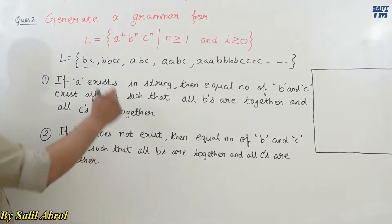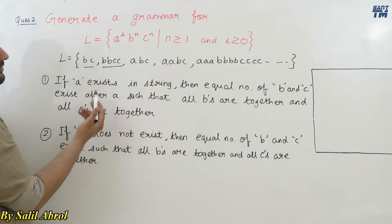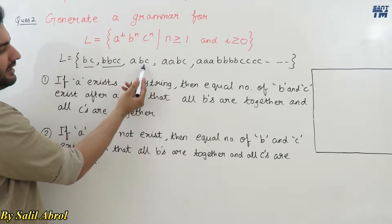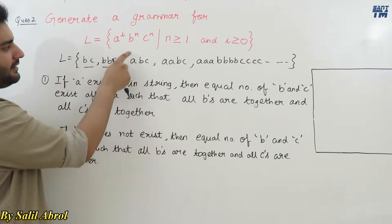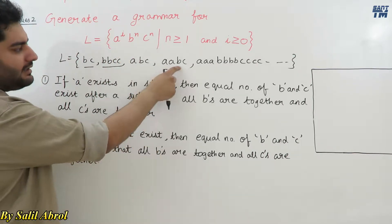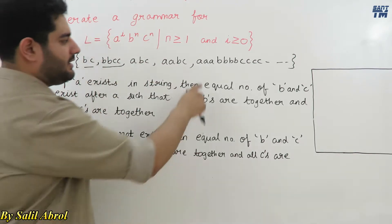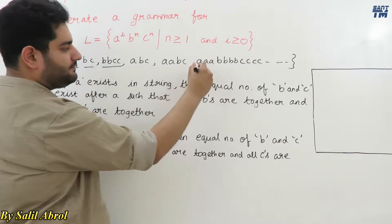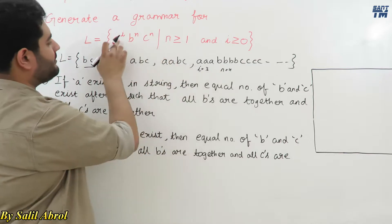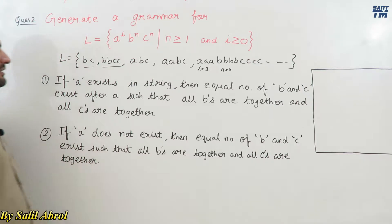For example, when n=2 we get bbcc. When i=1 and n=1 we get abc. When i=2 and n=1 we get aabc. When i=3 and n=4 we get aaabbbbcccc. These are the kinds of strings produced by this language.